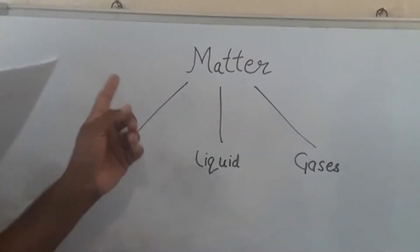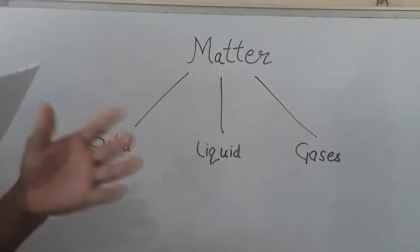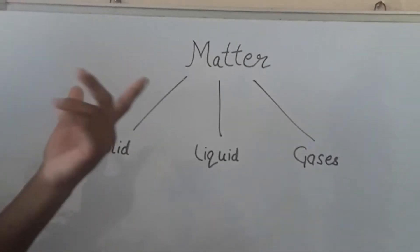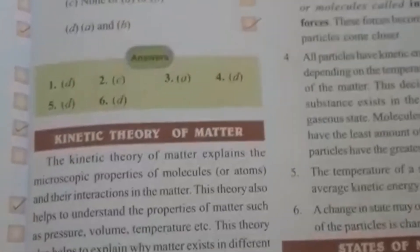Matter is that which occupies space. For example, table, tree, human being, etc. Now we are going to discuss about the kinetic theory of matter.